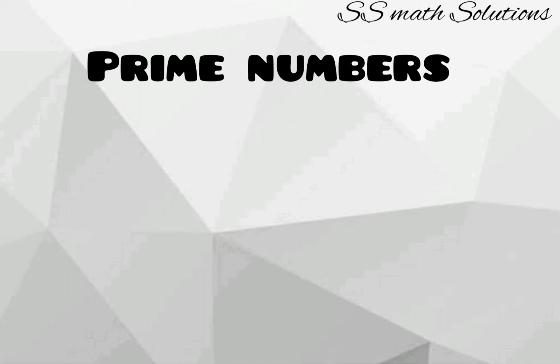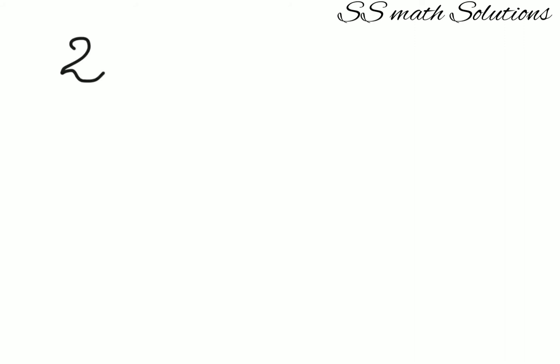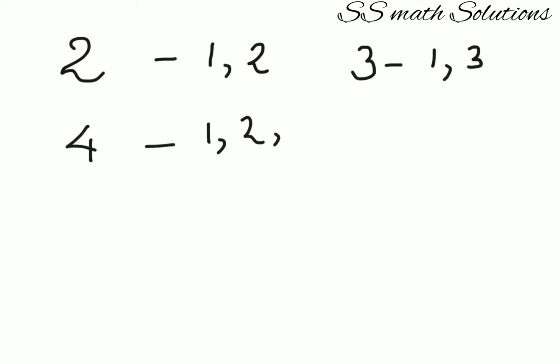Let's check with some examples. I am writing here: two — its factors are 1 and 2. Three — its factors are 1 and 3. Four — its factors are 1, 2, and 4. Now I'll explain how I identified these factors.